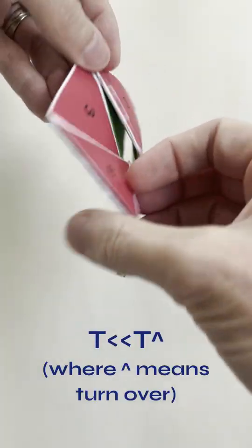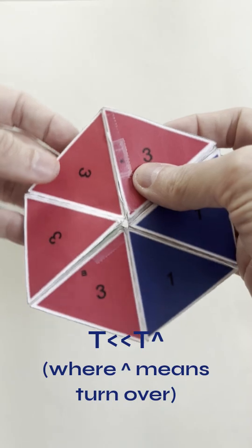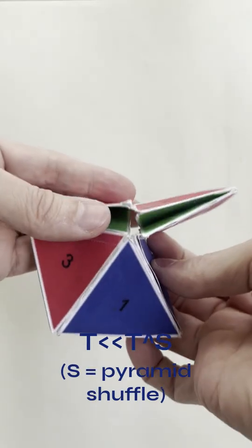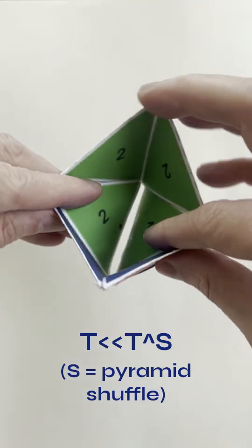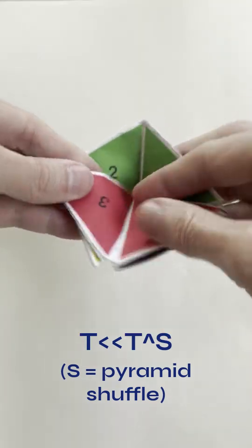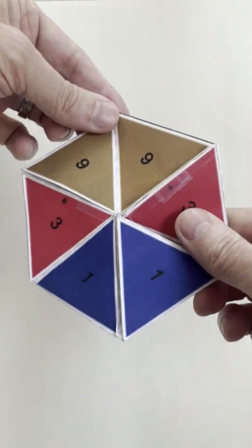Then turn it over while keeping the same reference hinge and we'll finish with a pyramid shuffle. Fold in half backwards across the reference hinge, open up a pyramid on the left side which will shuffle to the back, tuck in the corner, and open it back up. We now have that nice arrangement.